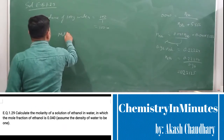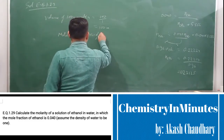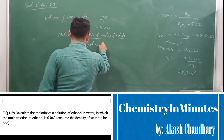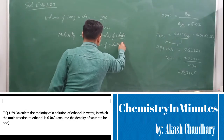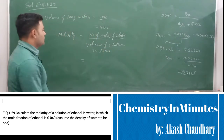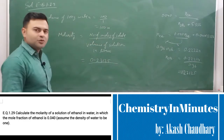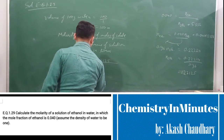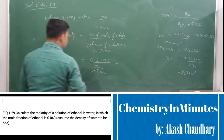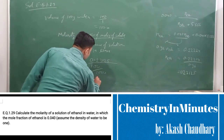Molarity equals the number of moles of solute divided by the volume of solution in liters. The number of moles of solute is 0.23125, and the volume of solution is 100 mL, which we convert to liters by dividing by 1000. Solving this gives a molarity of 2.3125 mol/L.